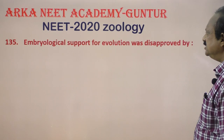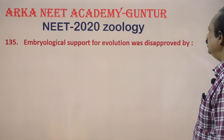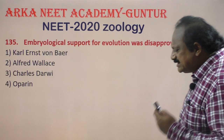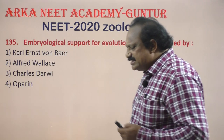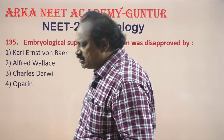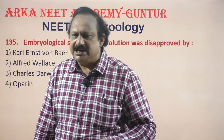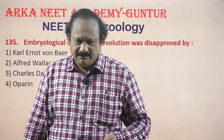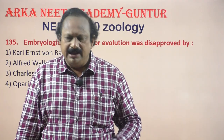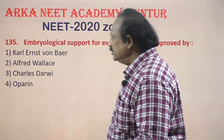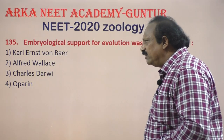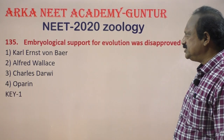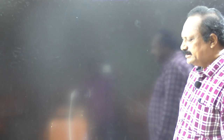Embryological support of evolution was associated with Ernst Haeckel, who proposed the biogenetic law — that ontogeny repeats phylogeny. Karl von Baer disproved the biogenetic law of Haeckel. Therefore, the answer involves Ernst Haeckel and Karl von Baer.